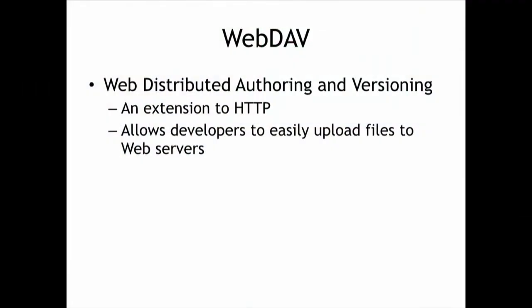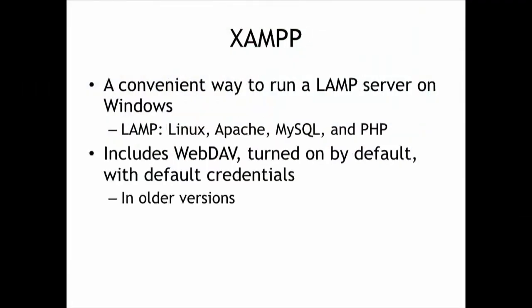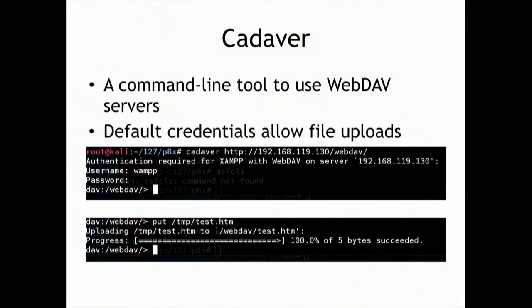They've got WebDAV running, which will automatically let people upload files, and of course it's misconfigured. The problem with XAMPP is it has WebDAV included in it with default credentials. If they didn't change the default credentials, we can get right in. You connect with Cadaver - the command line tool to connect to WebDAV. You just give it the IP address and the webdav path, and then it needs a name and password. If you just use wampwamp - that's the default password - and if it hasn't been changed, you can now upload files to the server.